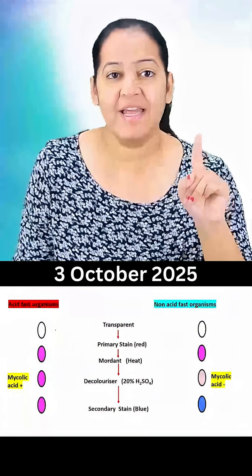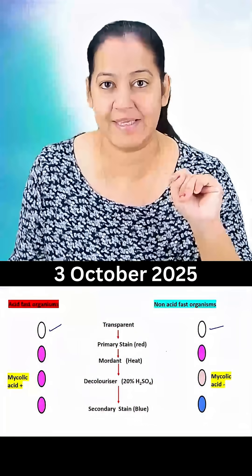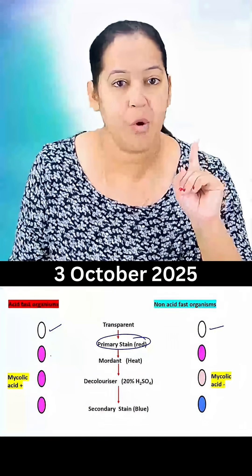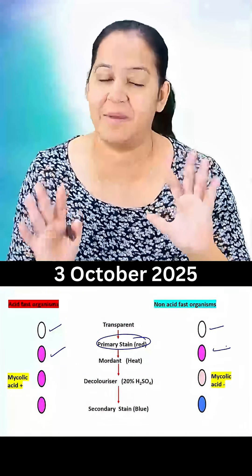There are four steps. Basically all bacteria are transparent. The first step we give a primary stain which is any stain red in color like Carbolfuchsin. All the bacteria take the primary stain and they become red in color.